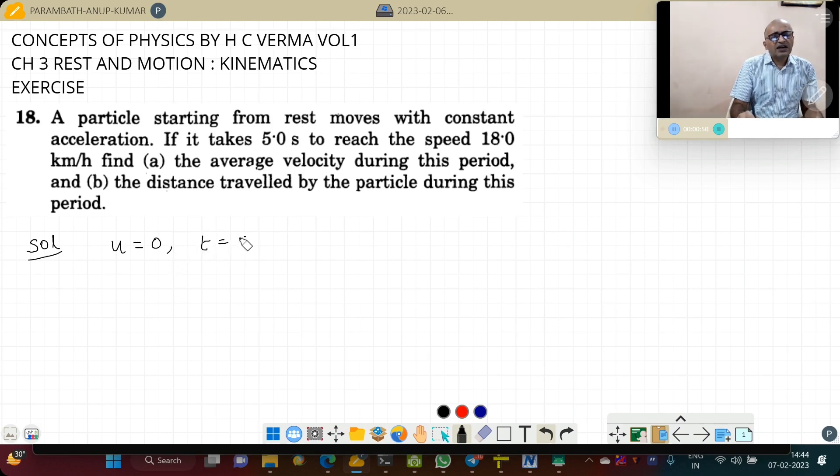Time taken is 5 seconds to reach a speed. Velocity v is 18 km per hour. This 18 km per hour, better to convert it to meter per second. That I will do by 18 into 5 by 18, that is 5 meter per second.